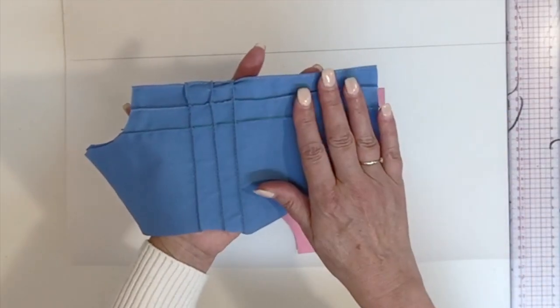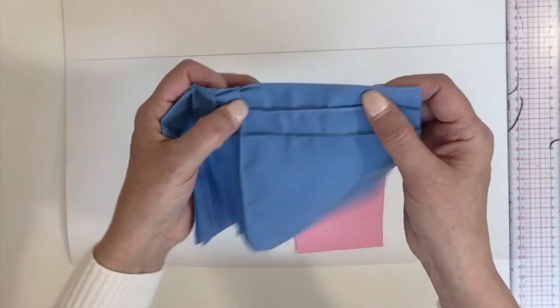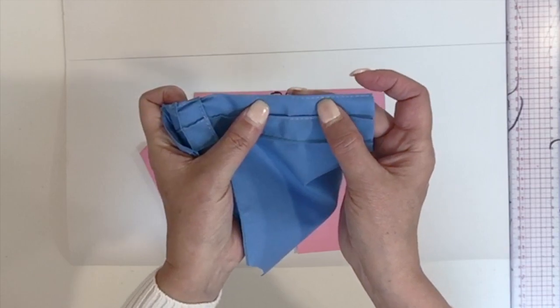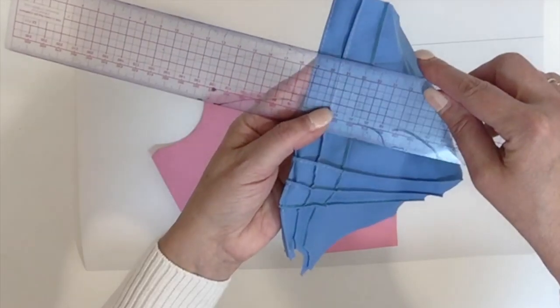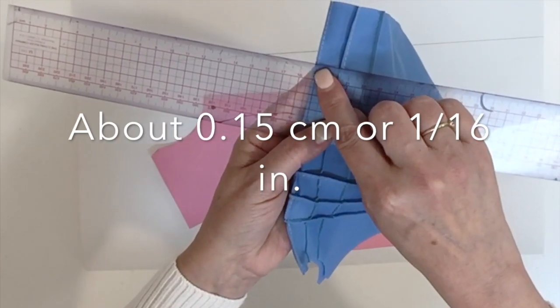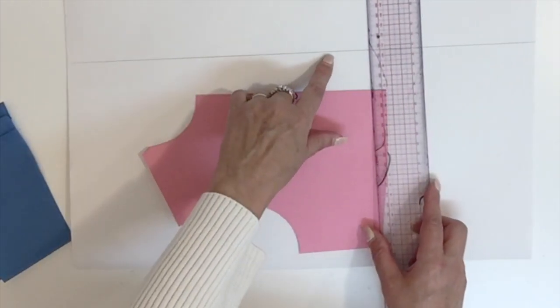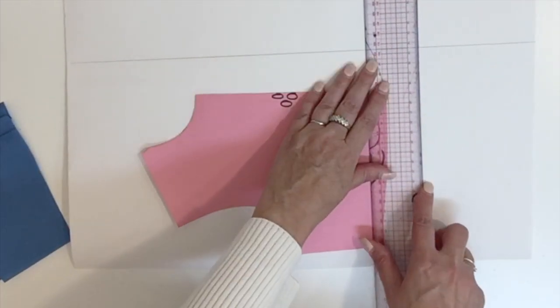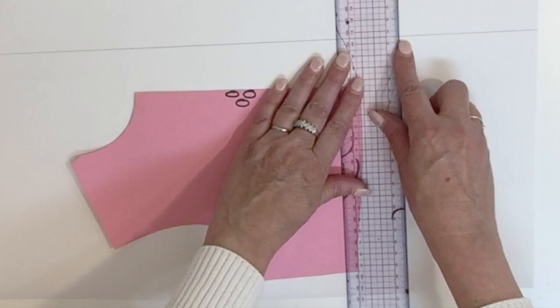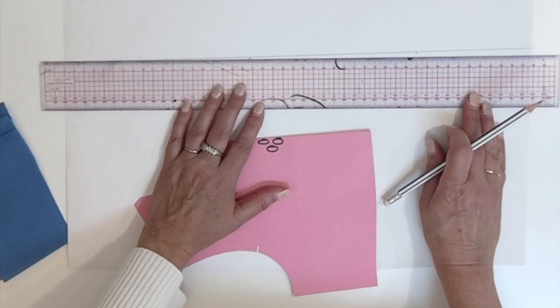Now it's time to decide the width of that little sewn pleat, and to be able to call it a pin tuck it has to be very tiny. If I show you here with my ruler, it's about a millimeter and a half from the fold line. So now on my paper from the center line, I'm going to measure 1.5 millimeters. Then we could trace that second line.